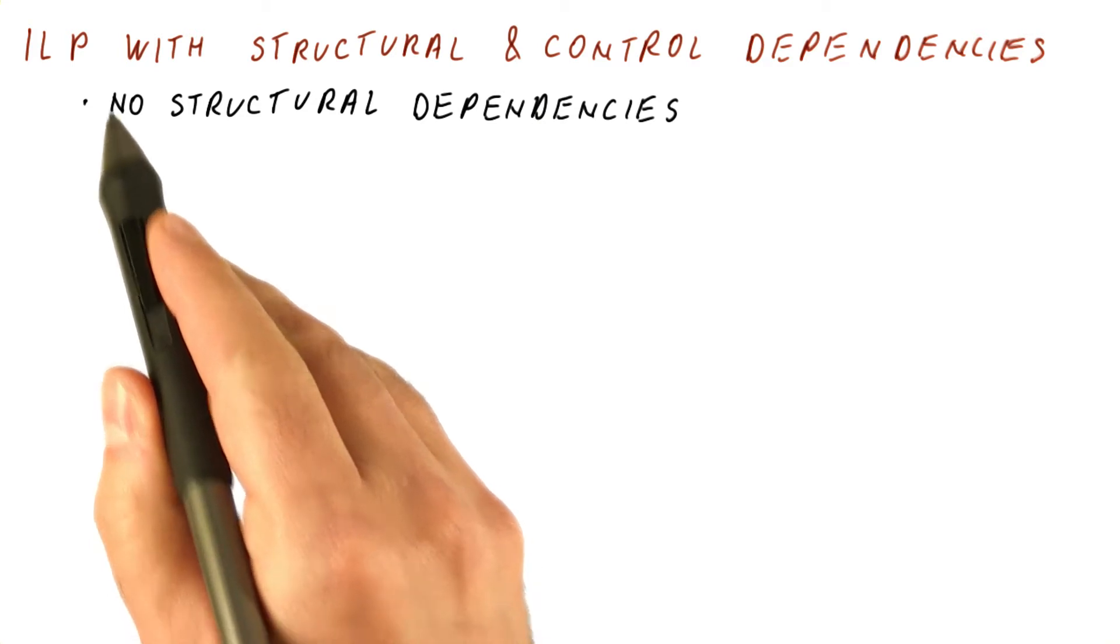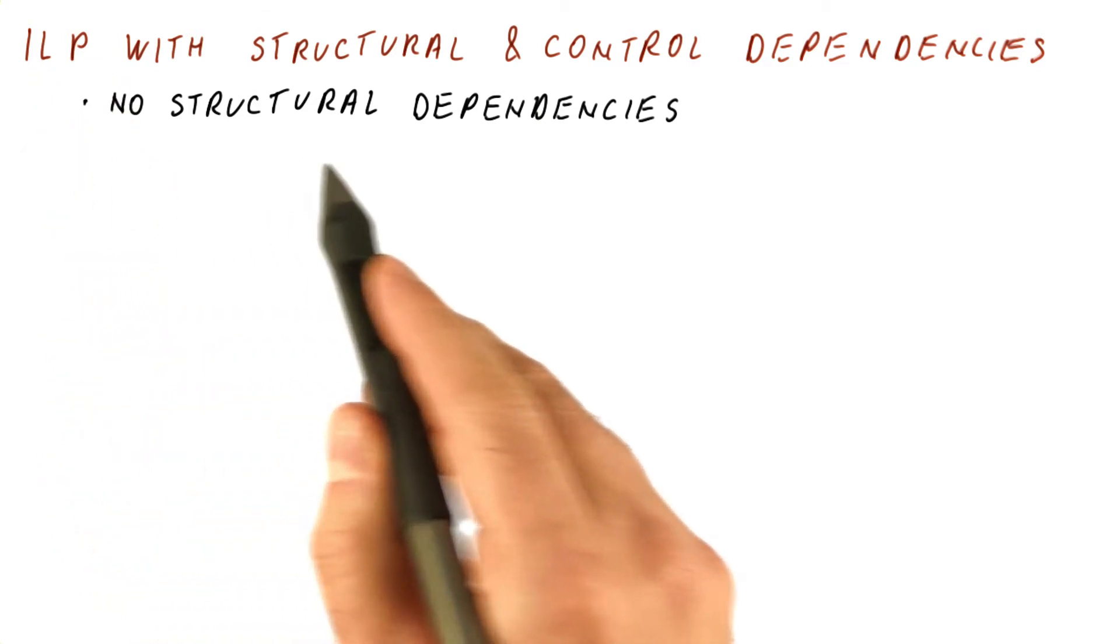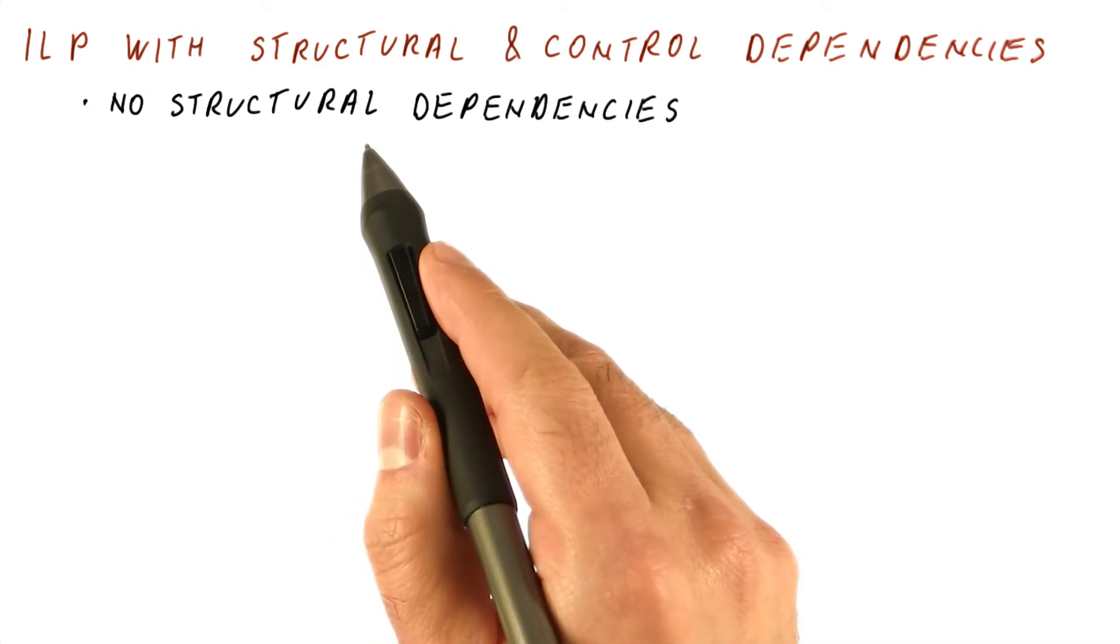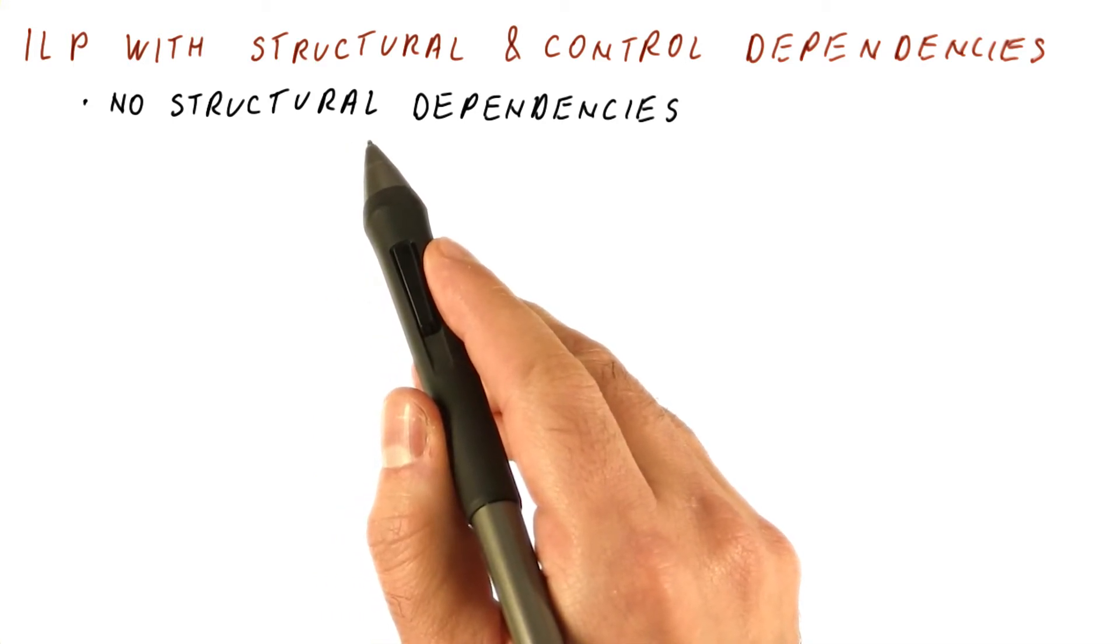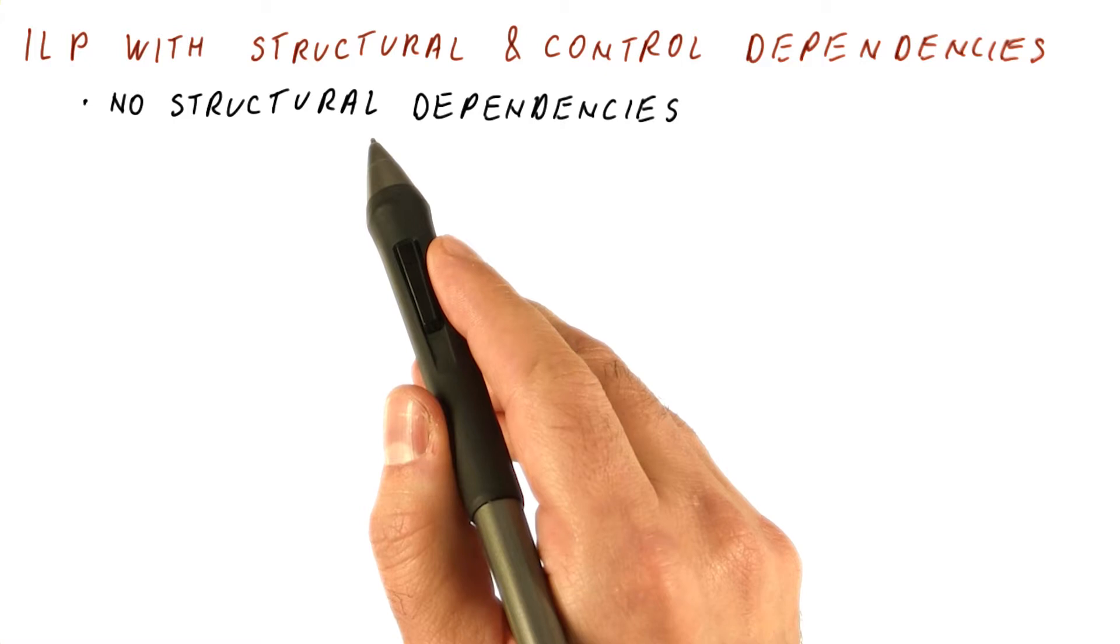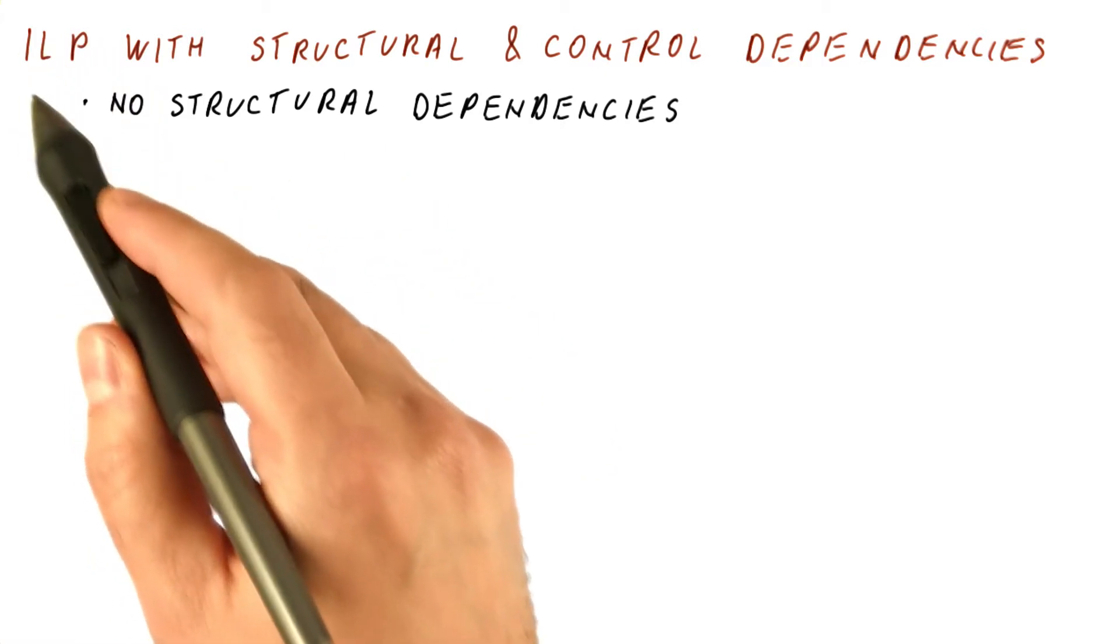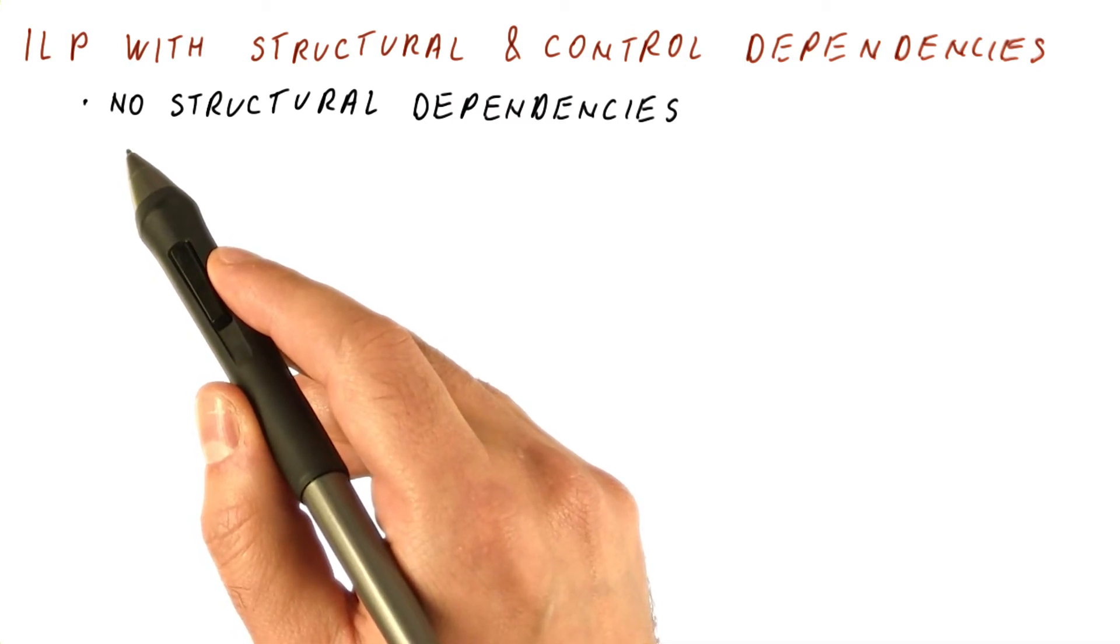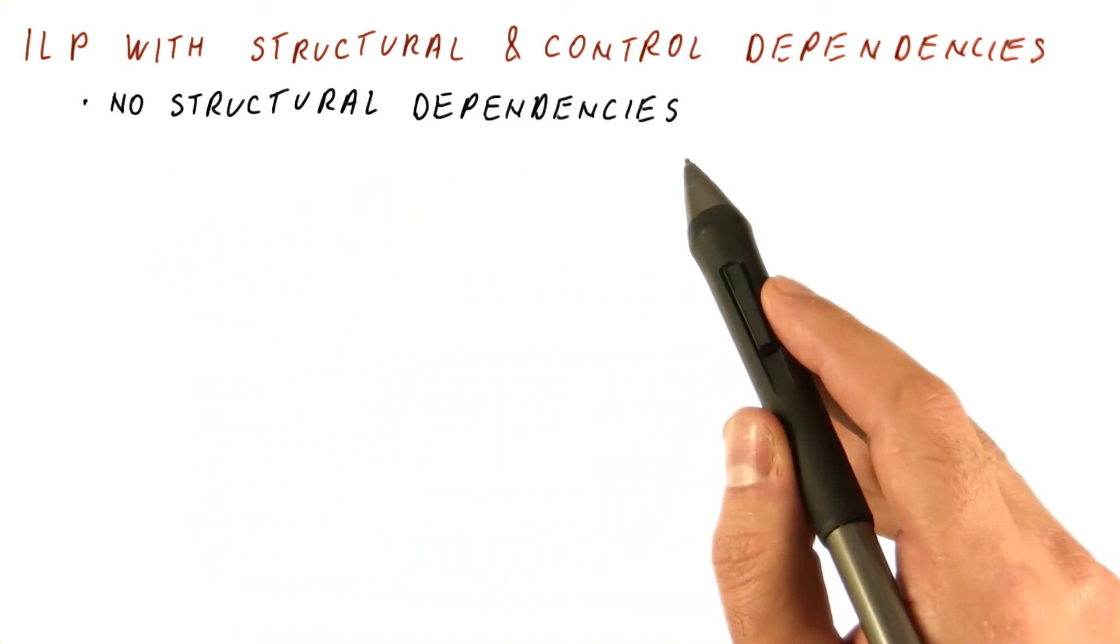And the answer is that first of all, when looking at ILP, there are no structural dependencies. Structural dependencies occur when we don't have enough hardware to do things in the same cycle. When computing the ILP, we are assuming ideal hardware. And as part of being ideal, it has no structural dependencies.